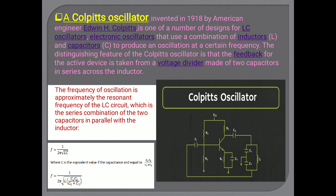Since both capacitors are connected in a series combination, the total equivalent capacitance can be found using C1·C2 / (C1 + C2). Therefore the frequency of oscillation of a Colpitts oscillator is F = 1 / (2π√(L · C1·C2/(C1+C2))). If there is only one capacitor connected in the oscillator, the formula simplifies to F = 1 / (2π√(LC)).